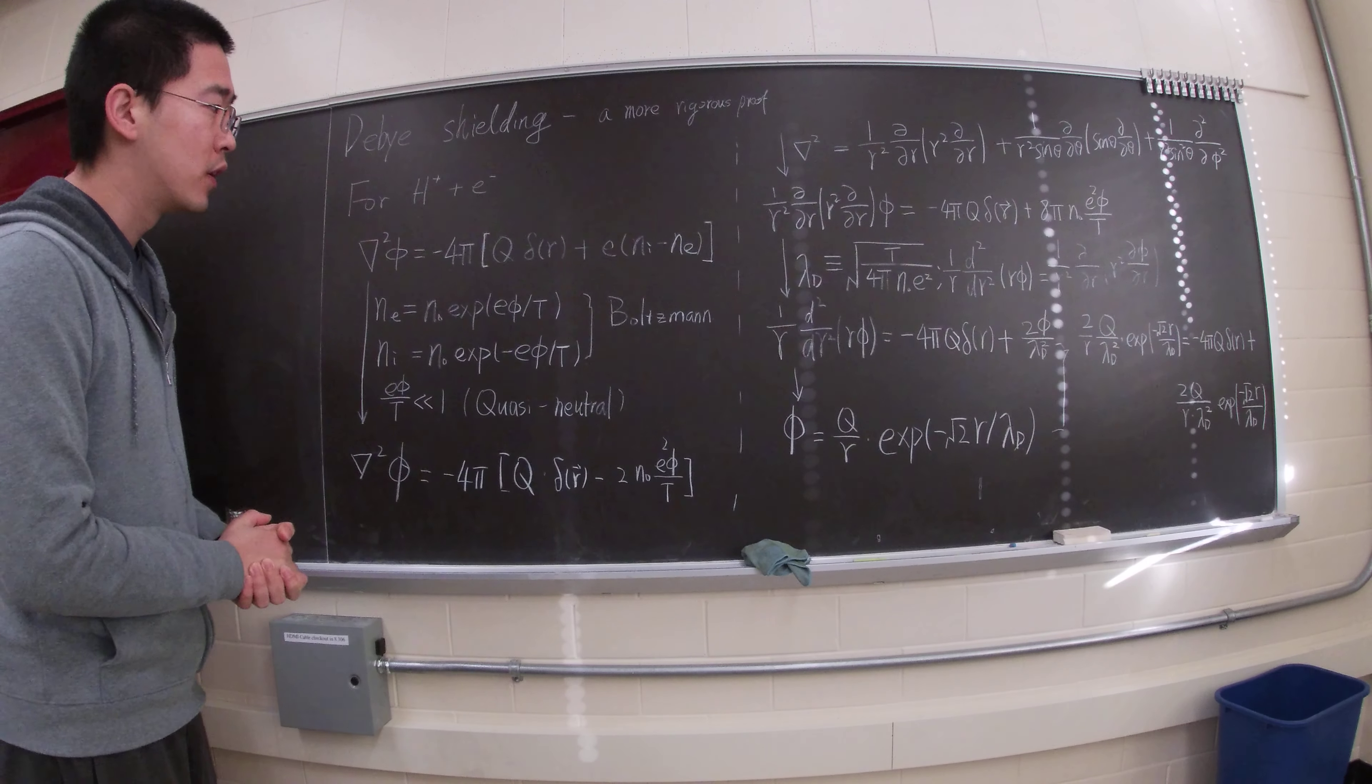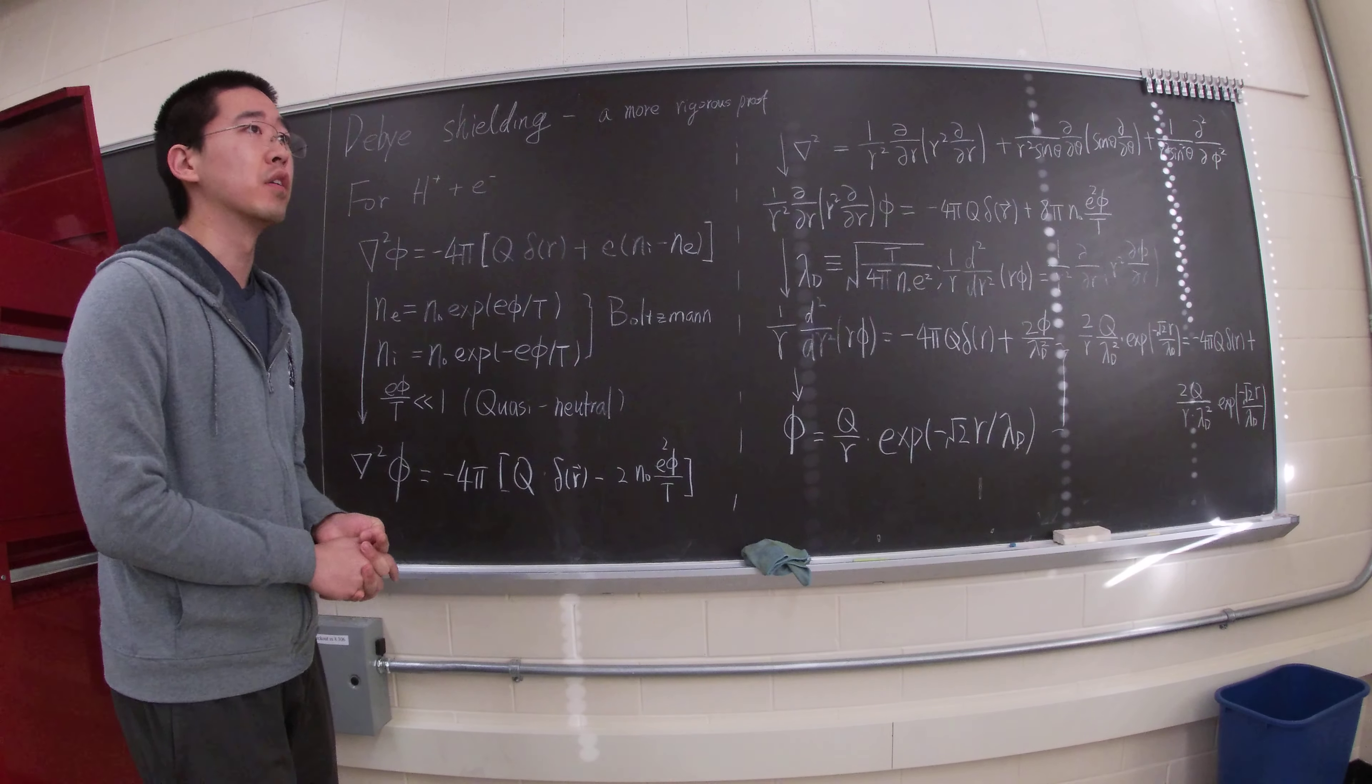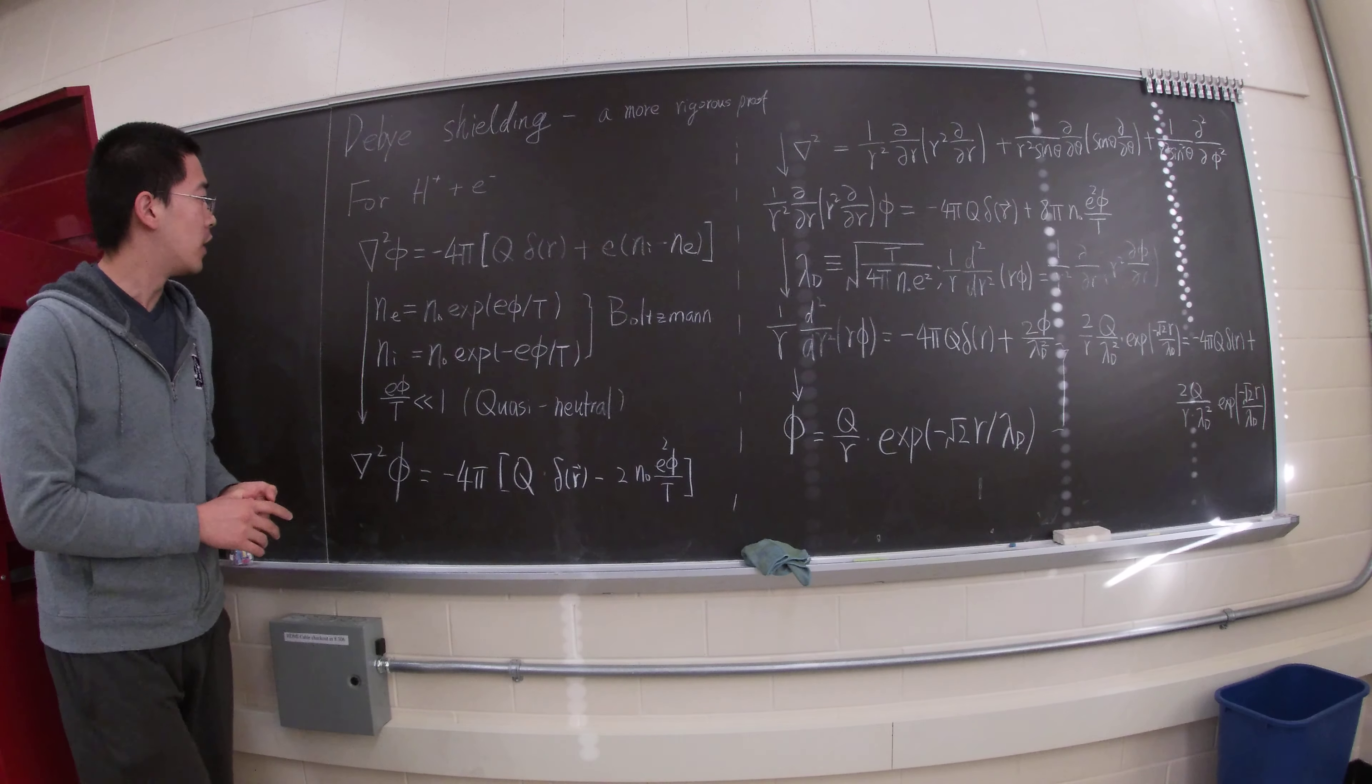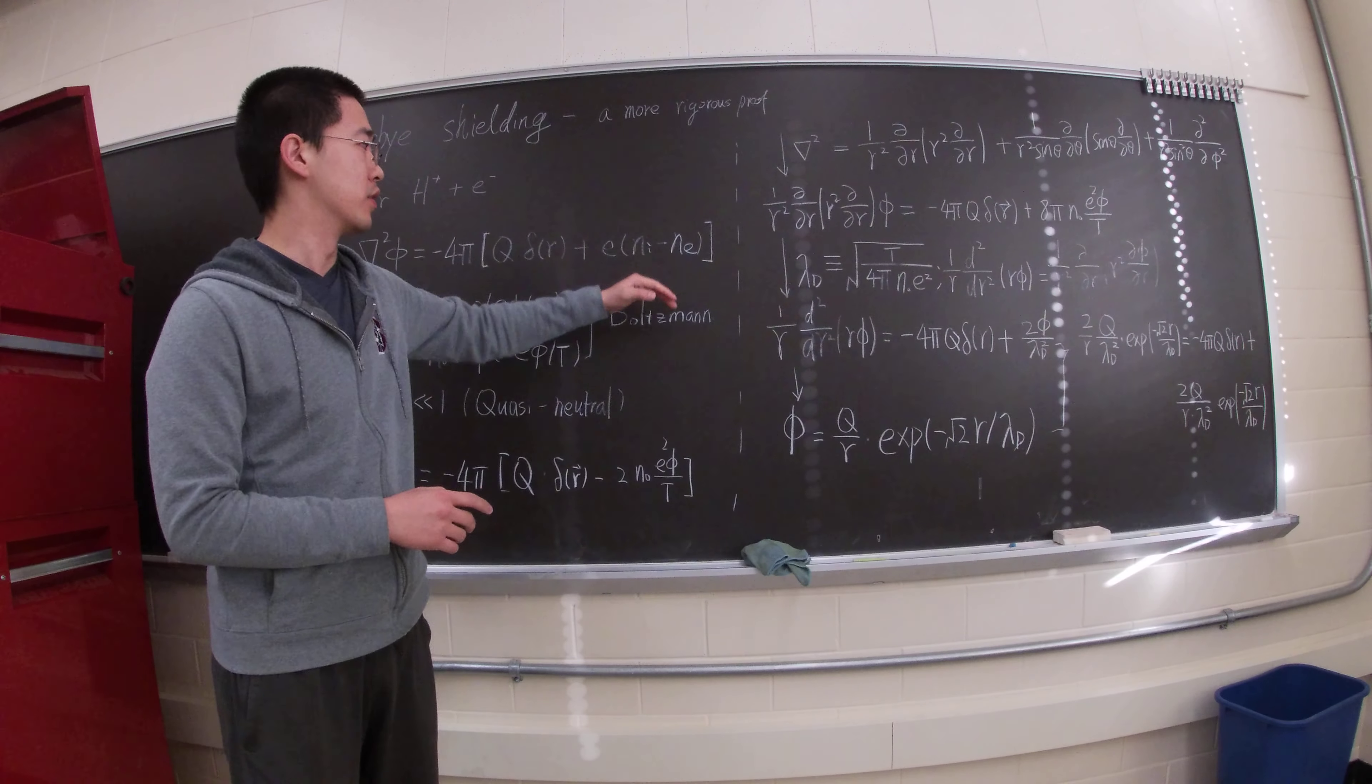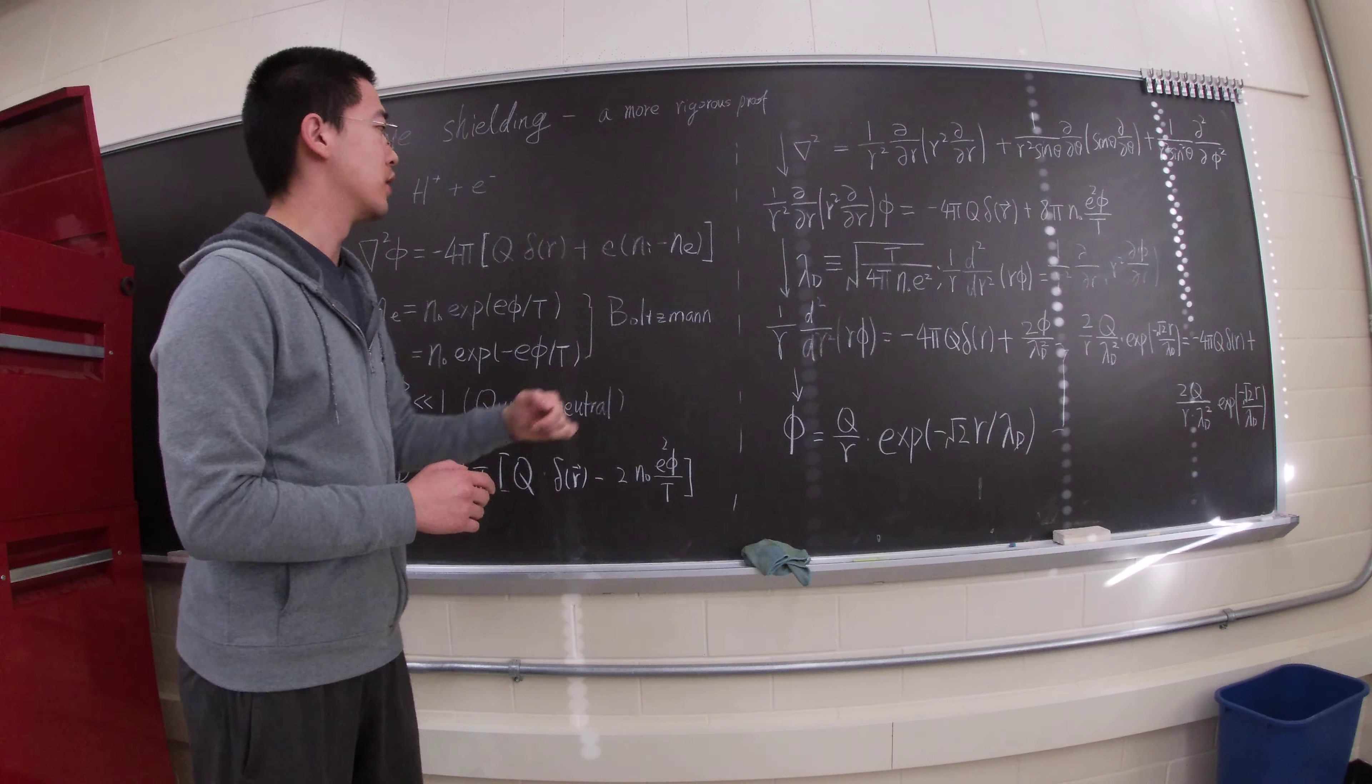Let's just consider the hydrogen and electron scenario. So, the Gauss's law expression will look like this: del squared phi equals negative 4 pi q delta r plus N_i minus N_e. That's a background charge, so ion density, electron density.